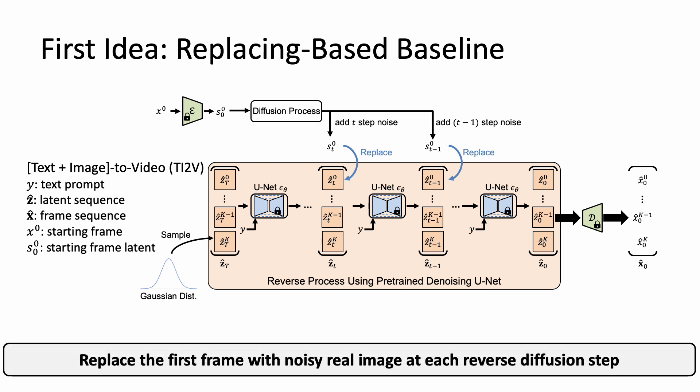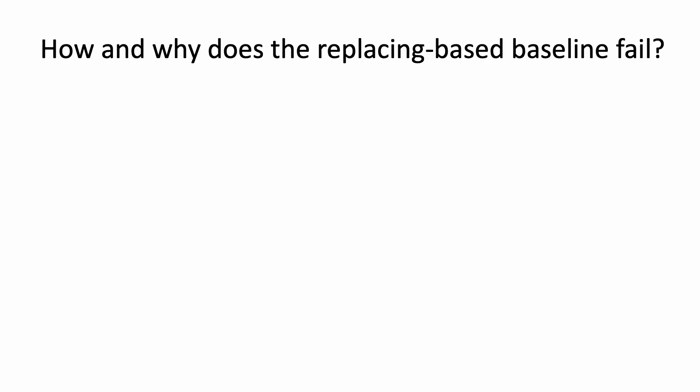To ensure the consistent signal-to-noise ratio in Z, we add T-steps of noise to S0. Using this baseline, we might hope that the temporal attention layers in the denoising U-Net can utilize the context provided by the first frame to generate subsequent frames.